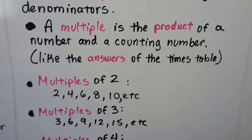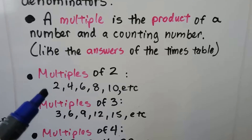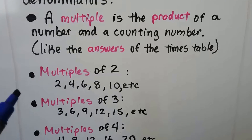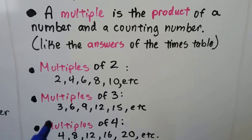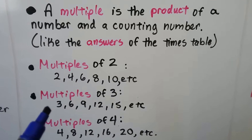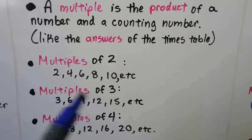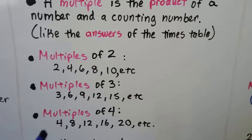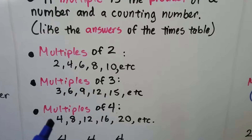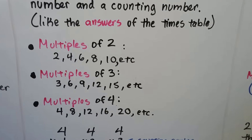Multiples of two would be the answers in the two times table: two, four, six, eight, ten, and so on. Multiples of three would be answers in the three times table: three, six, nine, twelve, fifteen. Multiples of four are answers in the four times table: four, eight, twelve, sixteen, twenty.